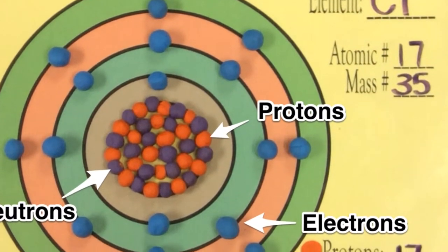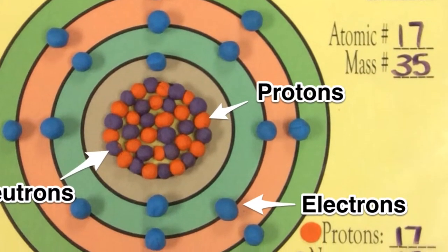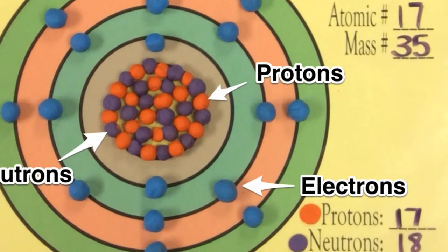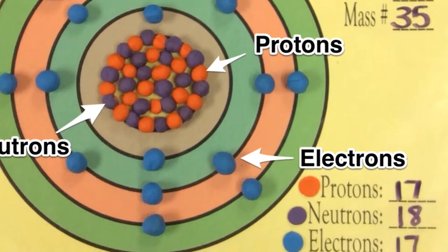Some isotopes are unstable, while others are stable. Because isotopes of an element have different numbers of neutrons, they also have different mass numbers.